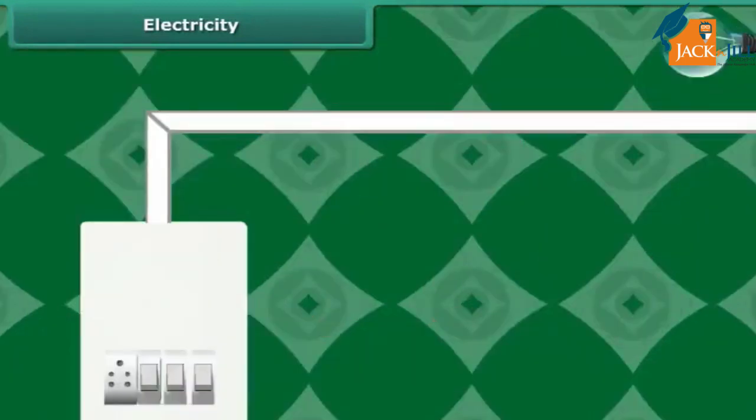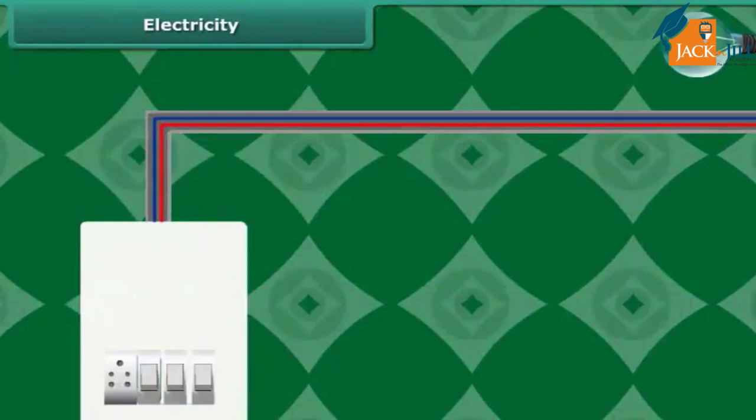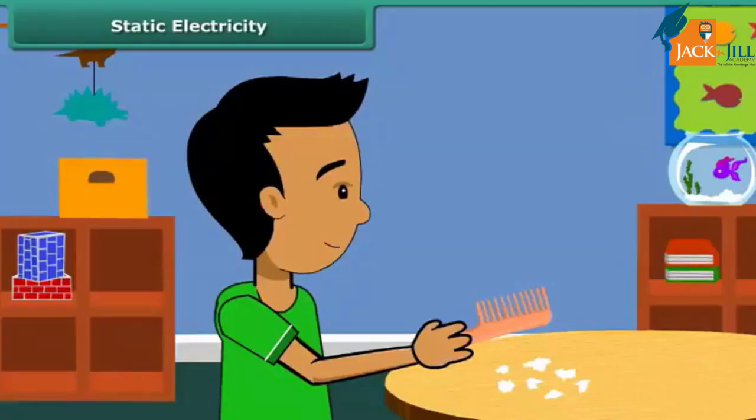Electricity passes through the wires and reaches the filament of the bulb, heating it up to glow.